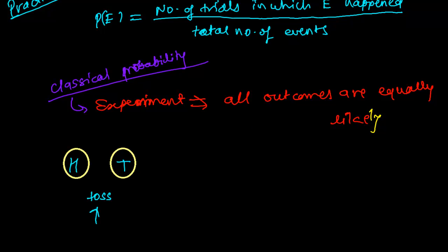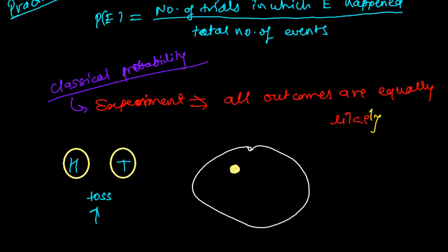In another way, suppose I have a box, and in that box there are five marbles: one yellow marble, one green marble, one red marble, one white marble, and one blue marble.